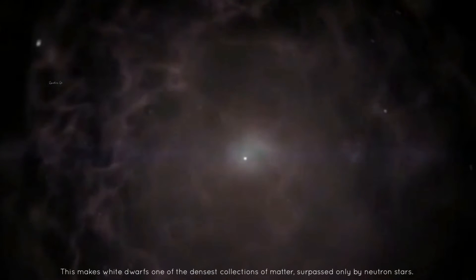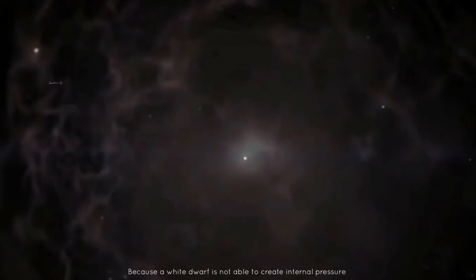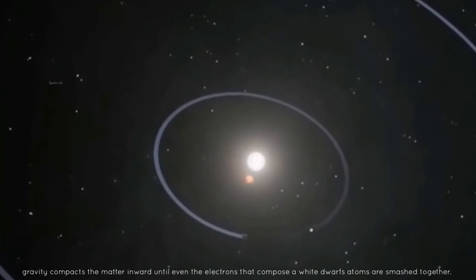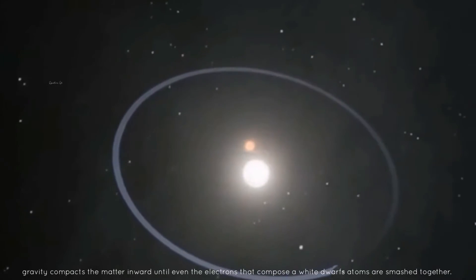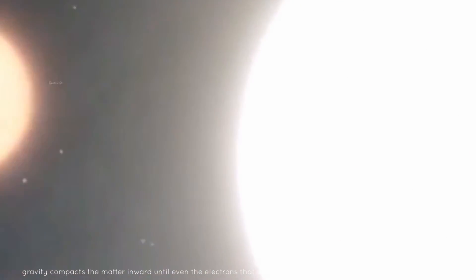This makes white dwarfs one of the densest collections of matter, surpassed only by neutron stars. Because a white dwarf is not able to create internal pressure, gravity compacts the matter inward until even the electrons that compose a white dwarf's atoms are smashed together.